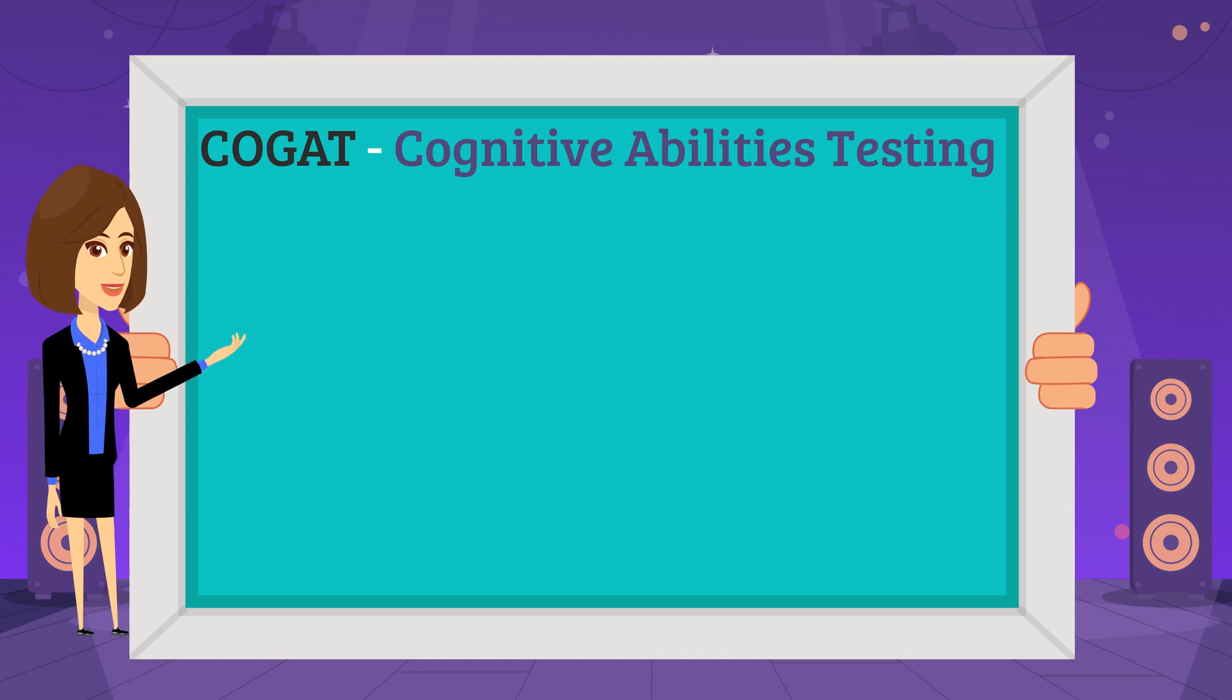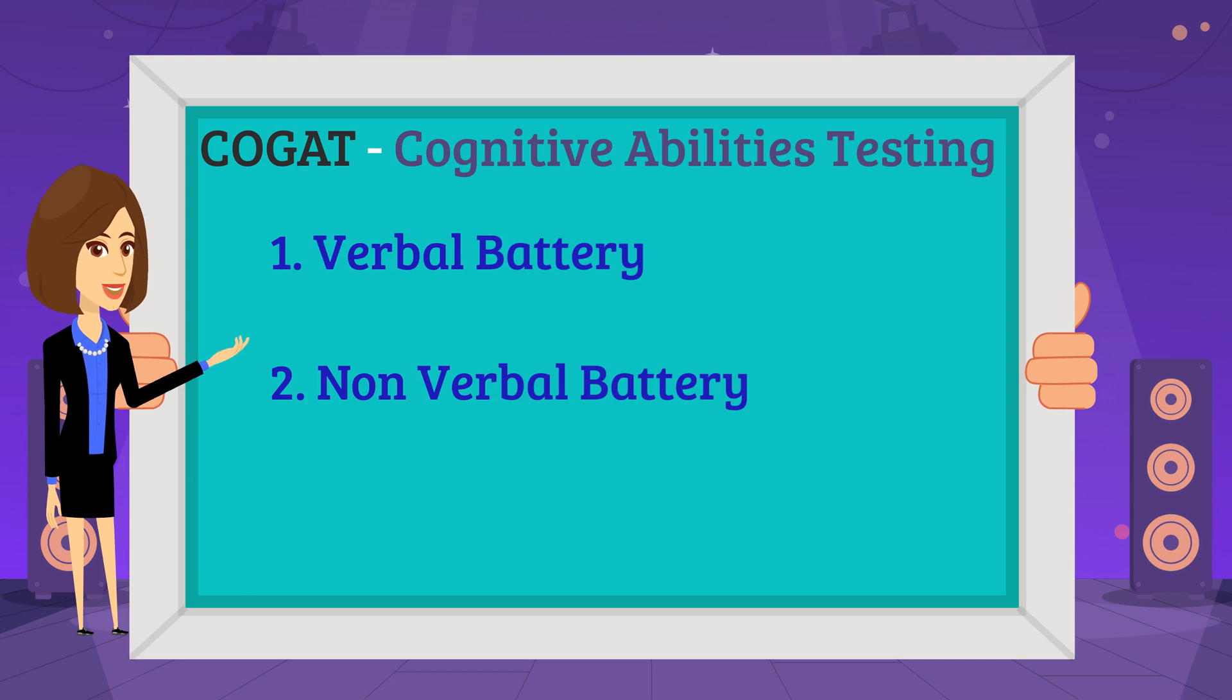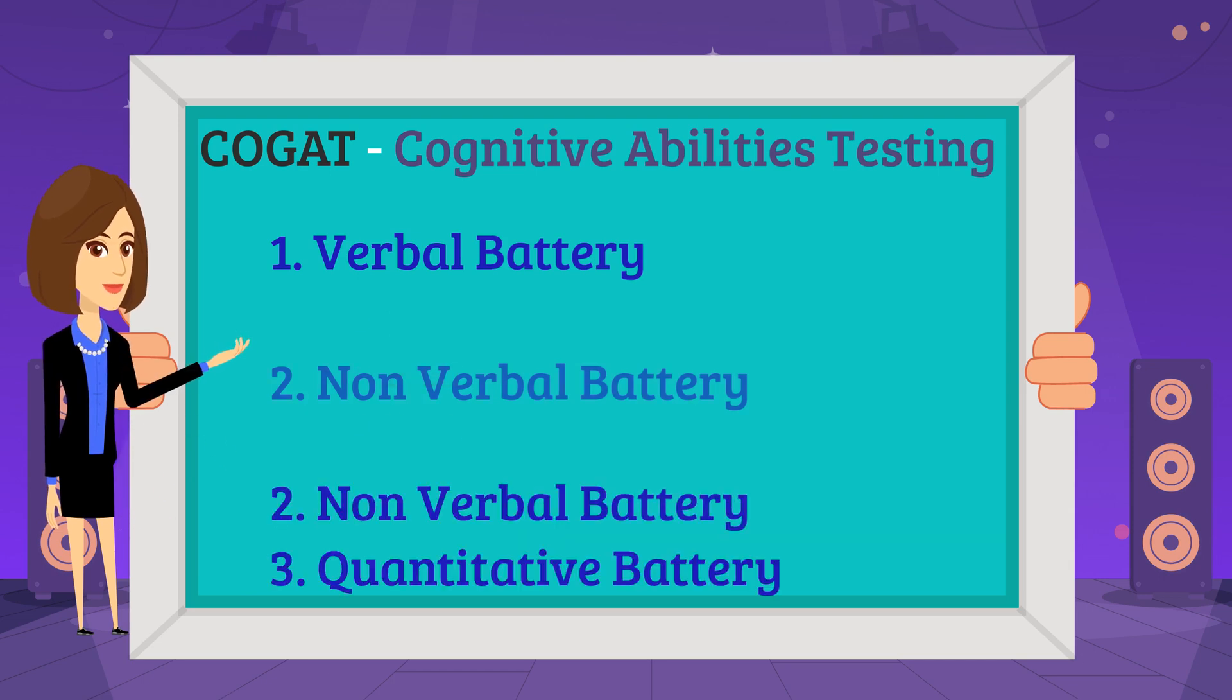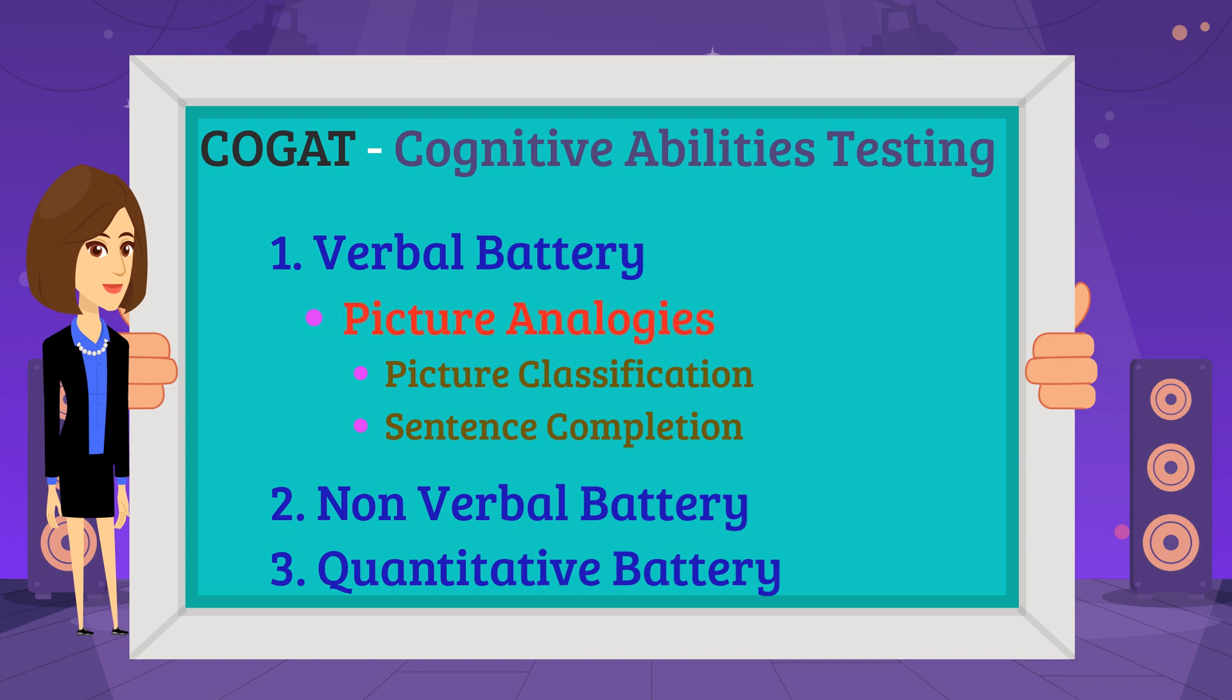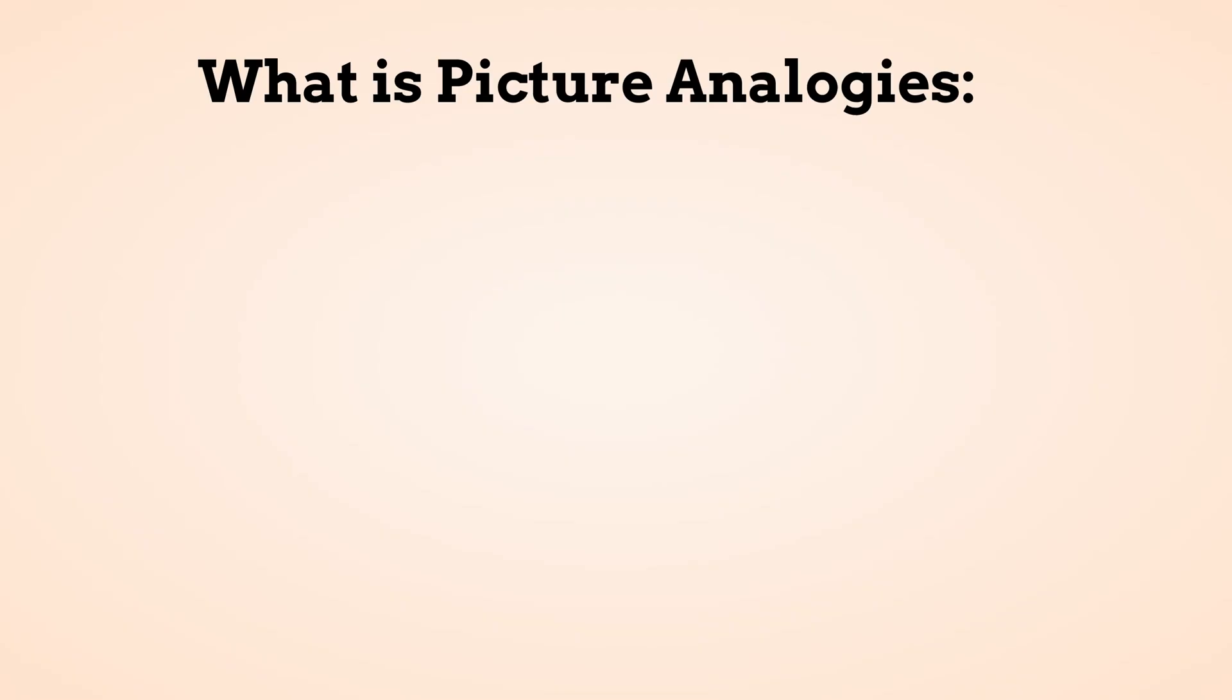There are three categories in COGAT: verbal battery, nonverbal battery, and quantitative battery. Picture analogies is one of the question types under verbal battery, and we are going to learn about it in this video. What is picture analogies?